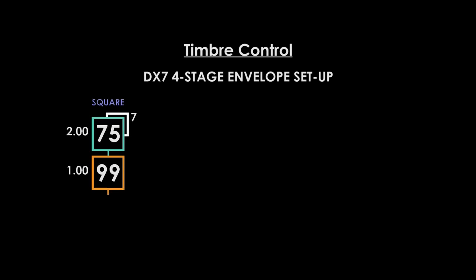Reset your square patch by reselecting it. Press edit, select your modulator, select EG level and enter the following: Level 1: 99, Level 2: 0, Level 3: 0, Level 4: 0. Select your rates and enter the following: Rate 1: 99, Rate 2: 0, Rate 3: 99, Rate 4: 99.